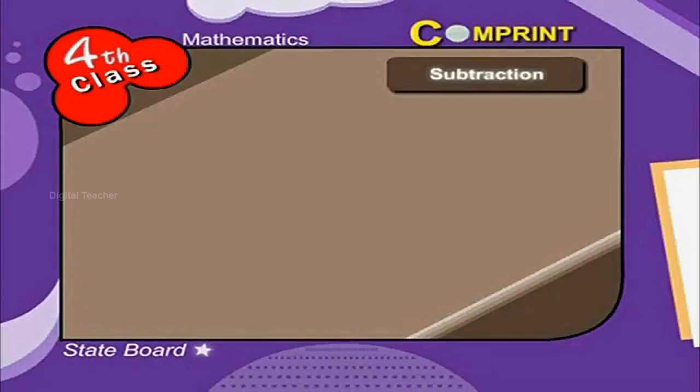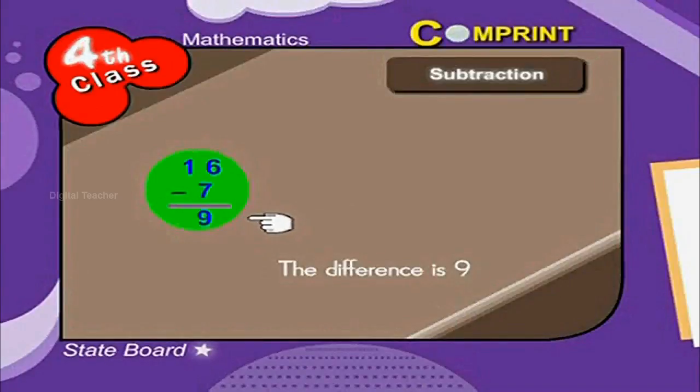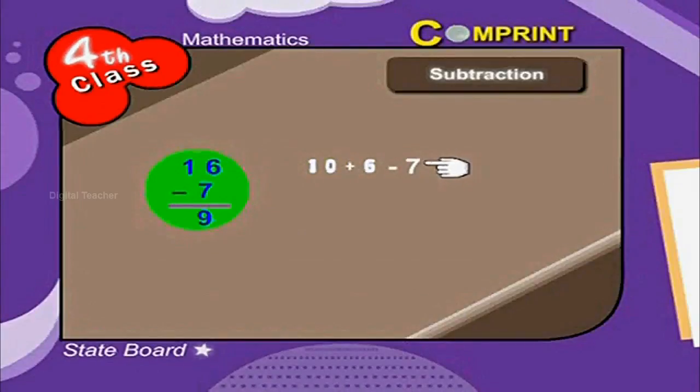Look at the example 16 minus 7. The difference is 9. This also can be represented like 10 plus 6 minus 7. That is equal to 10 minus 7 is equal to 3 plus 6. Together it is 9.